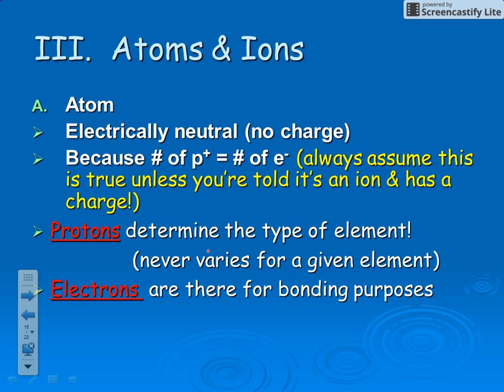Electrons are in the atom specifically for bonding purposes. Protons have a positive charge and electrons have a negative charge, so in an atom the positives and negatives cancel each other out.